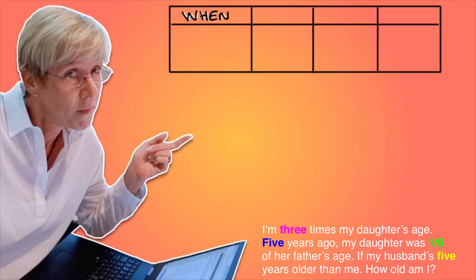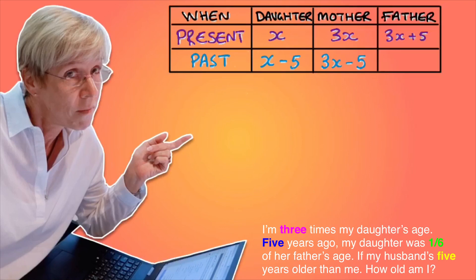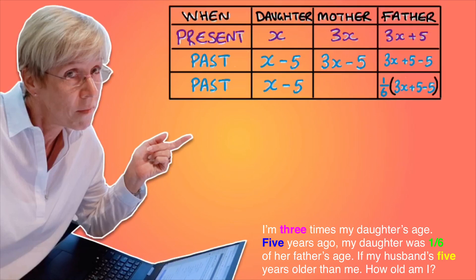Let's start with our table. We have the daughter, the mother and the father. At present, the daughter's age is X, the mother is three times her daughter's age so three X, and the husband is five years older than her so three X plus 5. In the past, five years ago, the daughter's age was X minus 5, the mother's was three X minus 5, and the father's was three X plus 5 minus 5. We know that five years ago the daughter's age equalled one sixth of her father's age. Let's set up the equations.